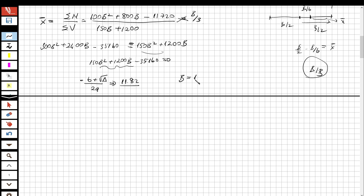So the base width of this dam is 11.82 meters. I didn't solve the quadratic in full detail here since you know from high school math how to solve it using the formula b = (−b ± √(b² − 4ac)) / 2a with discriminant Δ = b² − 4ac. If anything was unclear, please comment and I'll try to help. See you in the next question.